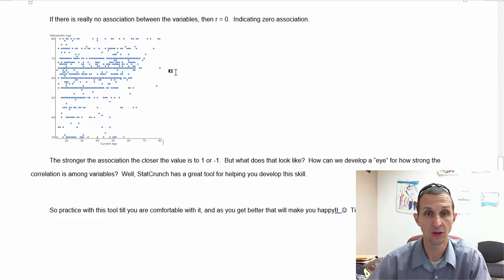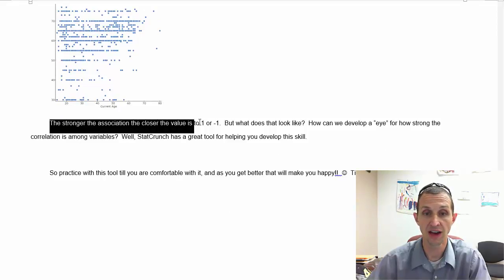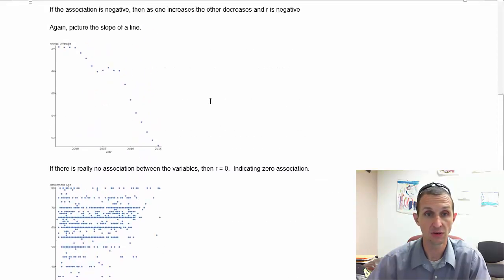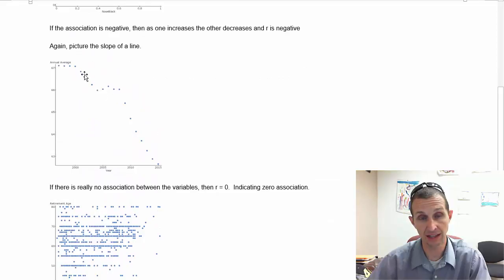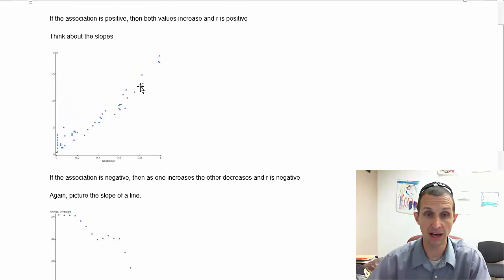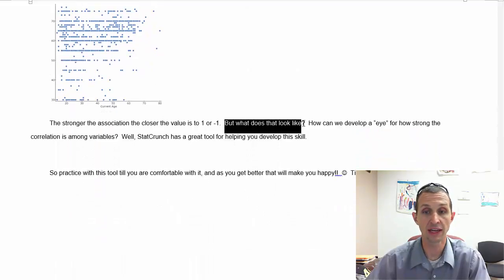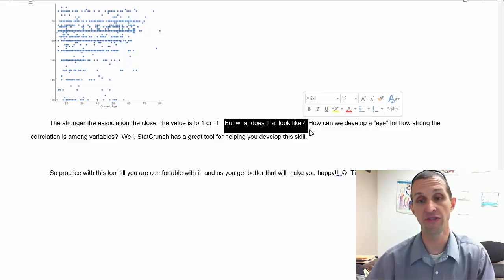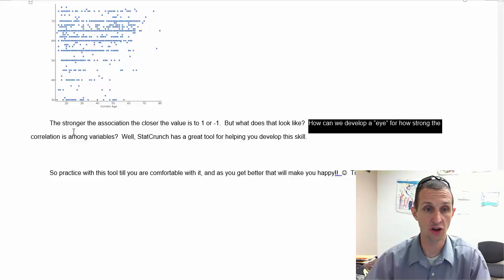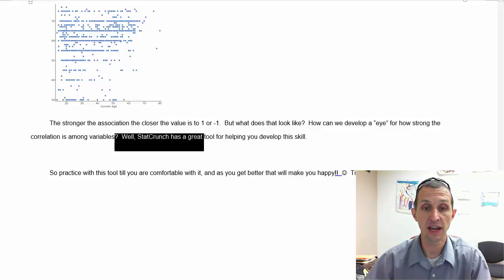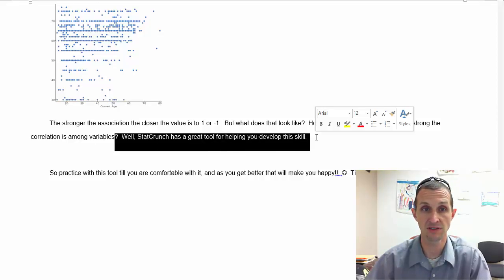The stronger the association, the closer the value is to one or negative one. If I go back, this is probably close to negative one - there's a fairly strong association. This one has a very strong positive association - this one's going to be very close to positive one, as you can see with the tiger nose black data. But what does it look like when it's not close? What is 0.5 look like? How can we develop an eye for how strong the correlation among the variables is? Well, StatCrunch actually has a great tool for helping you develop this skill, and that's where I want to go now.